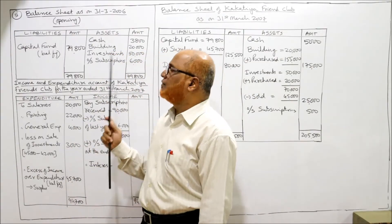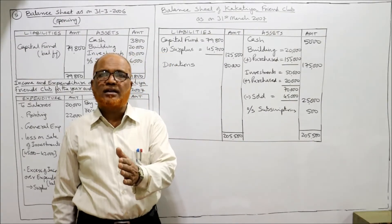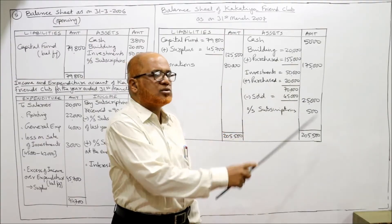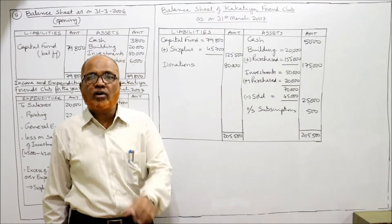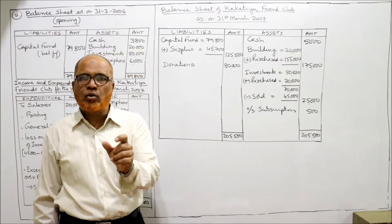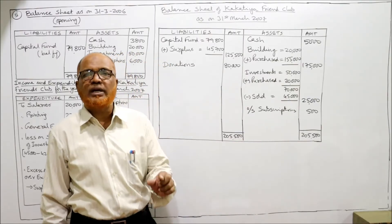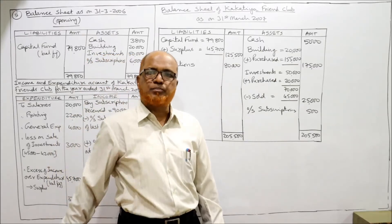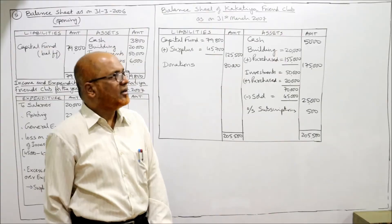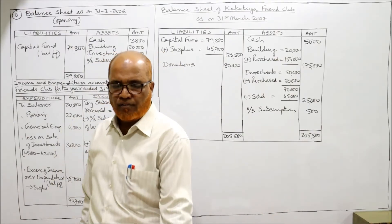Investment: opening balance 50,000, plus investment purchased during the year 20,000. The book value of investment sold is 45,000, so that is removed. Remaining investment value is 25,000. Outstanding subscription for the current year is 500, which is shown as an asset. Totals on both liability and asset sides come to 2,05,500, and the balance sheet tallies. This is the end of problem number 5.